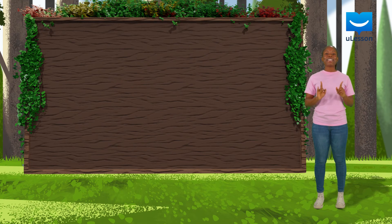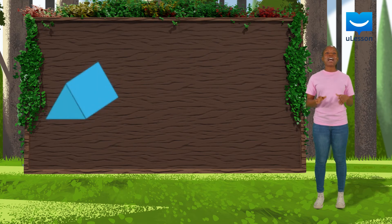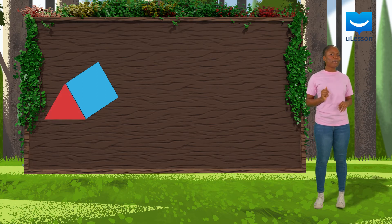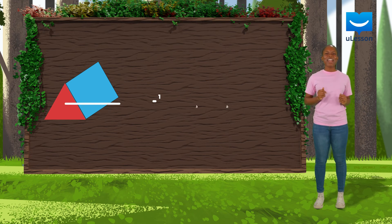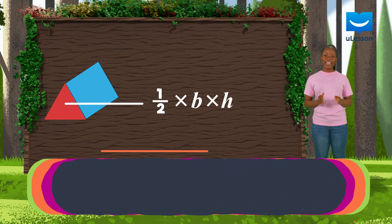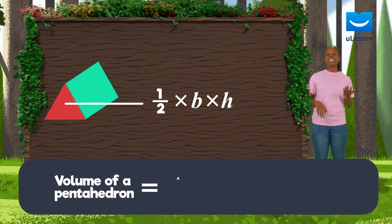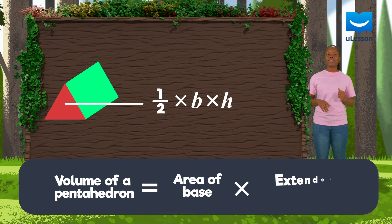Now let's take a look at our triangular prism. The base of this prism is a triangle. Do you remember the formula for the area of a triangle? That's right — half base times height. Multiplying this by the extended length of the prism gives the volume.